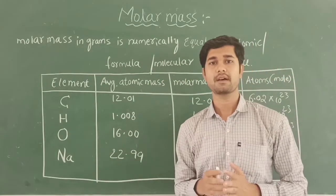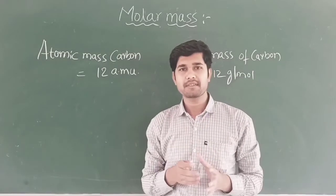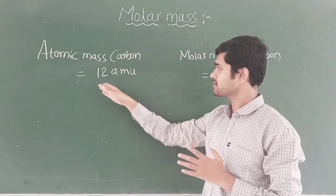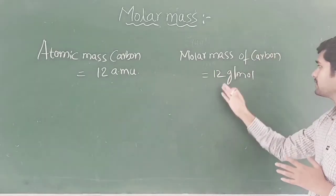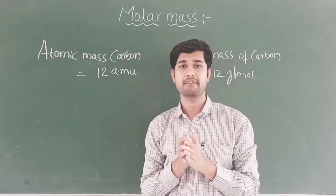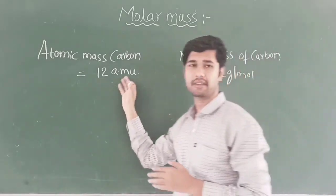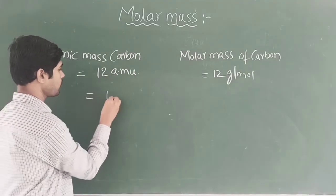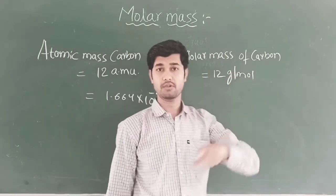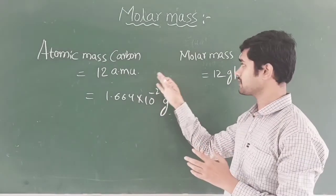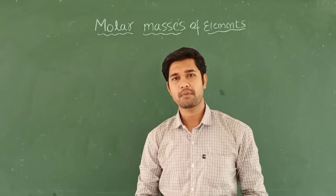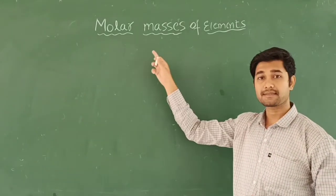Molar mass is numerically equal to atomic mass, formula mass, and molecular mass. One interesting point: the atomic mass of carbon is 12 amu and molar mass is 12 gram per mole — the number is the same but the units are very different. One amu is approximately 1.664 × 10⁻²⁴ grams, yet the molar mass is 12 grams. Now let us study the molar masses of elements.